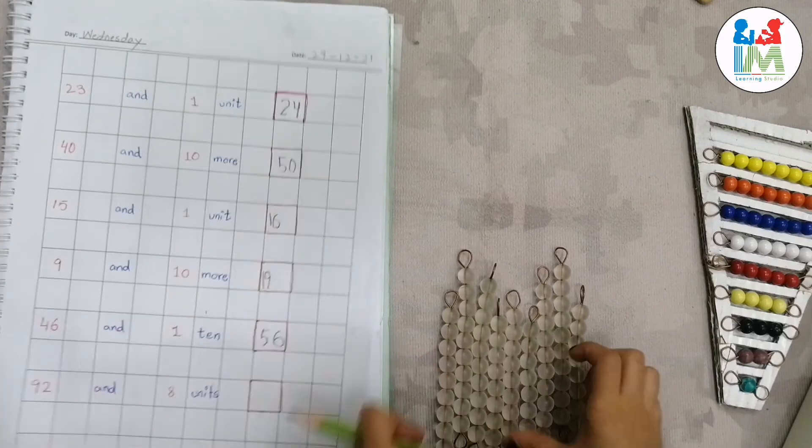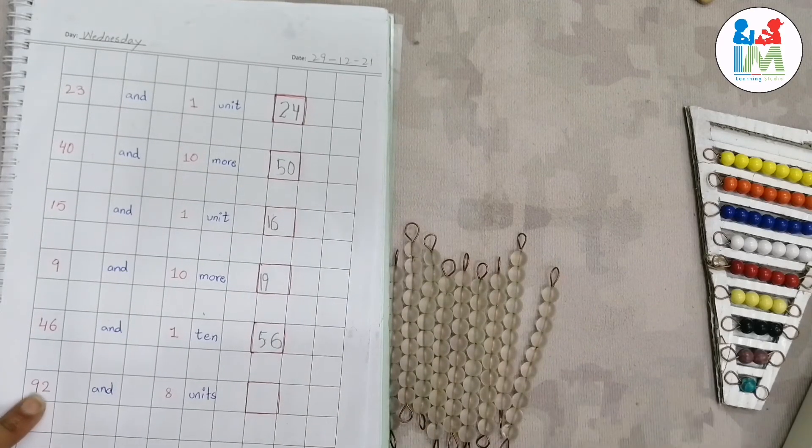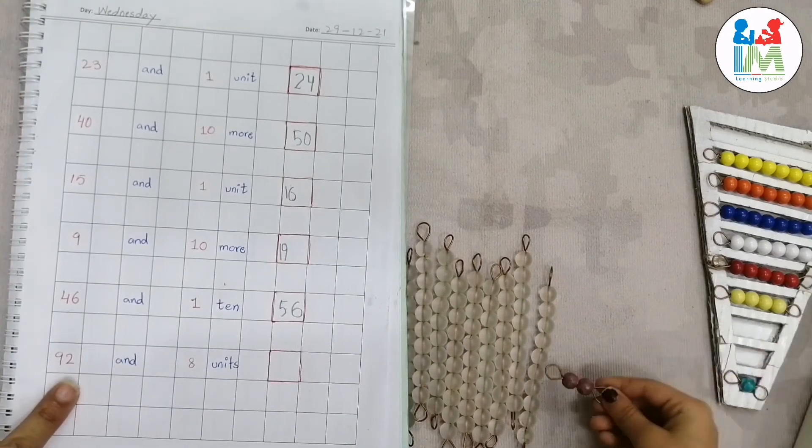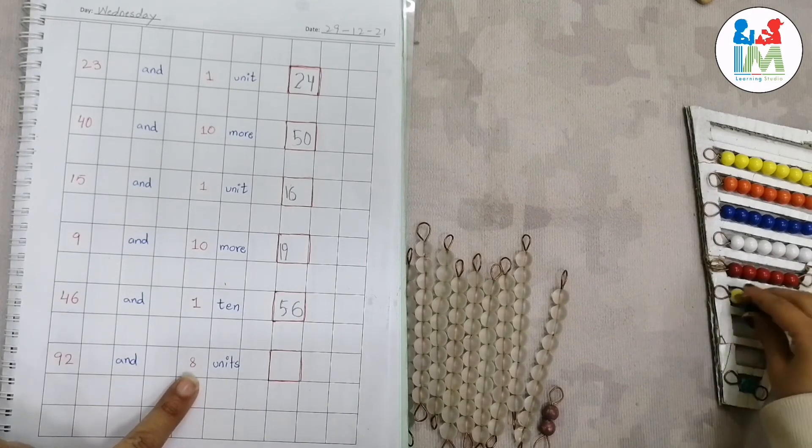Nine tens, how many tens? Nine tens. Okay, now how many units in 92? Two. Two units, place two units.